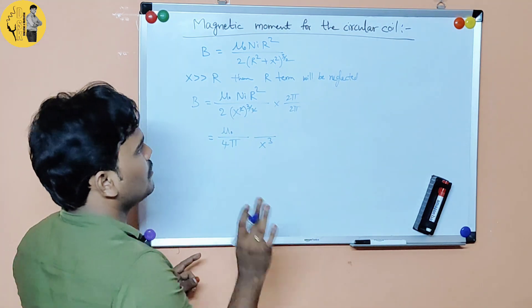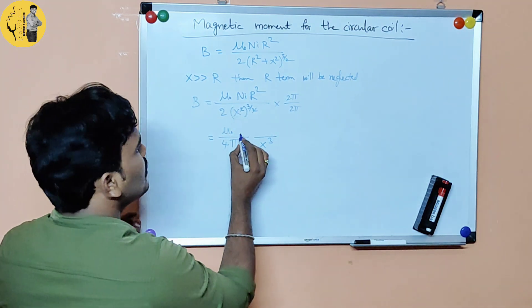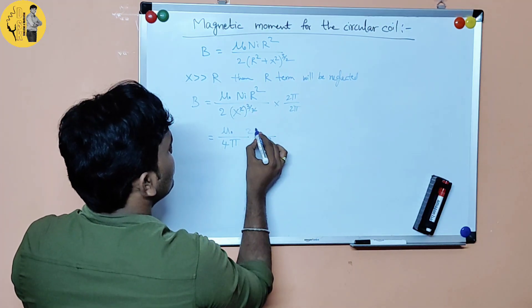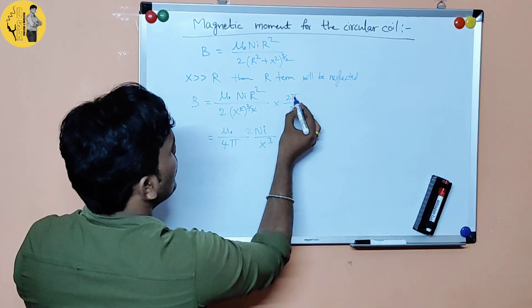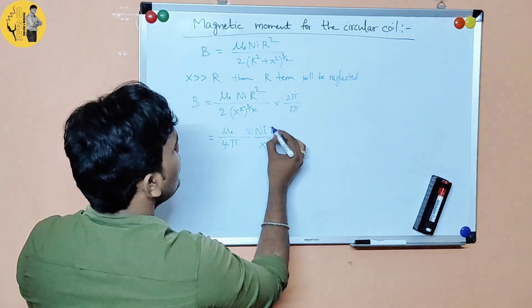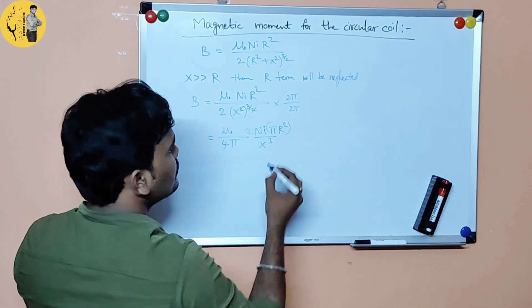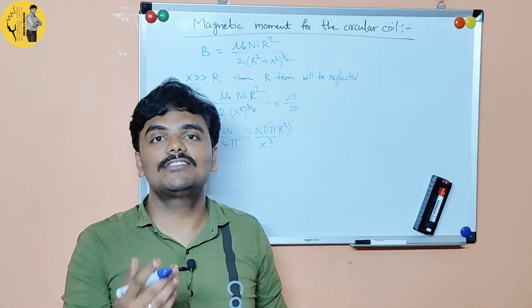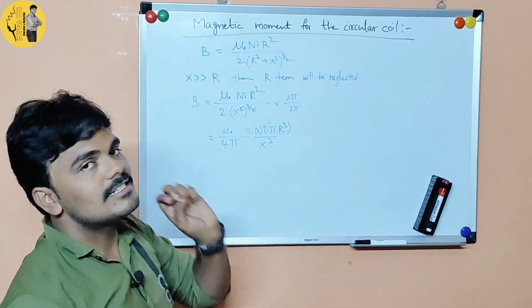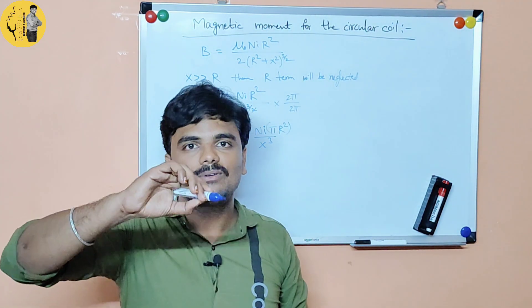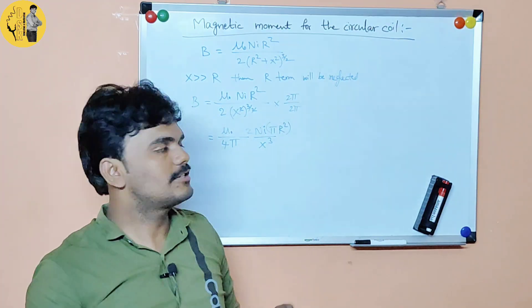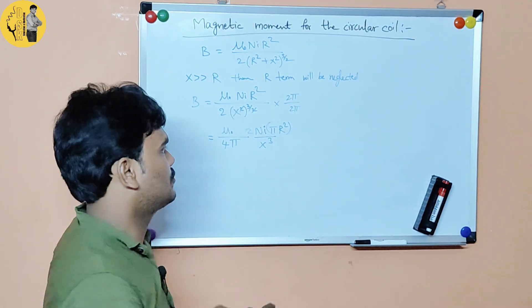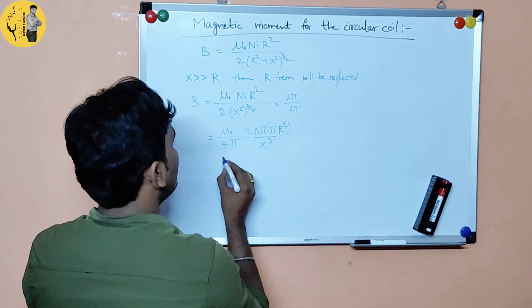So we have x cubed in the denominator. In the numerator we have n, i, and pi r squared. Pi r squared is the area of the circle — the circular coil with radius r. So pi r squared equals A, the area of the circle. We can substitute A in place of pi r squared.